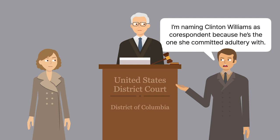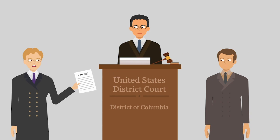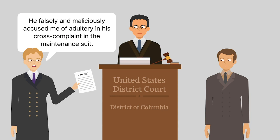Williams filed an answer in which he denied Robinson's adultery allegations. Williams then filed a separate lawsuit against Robinson for libel and slander, asserting that Robinson had falsely and maliciously accused Williams of adultery in Robinson's cross-complaint in the maintenance suit.